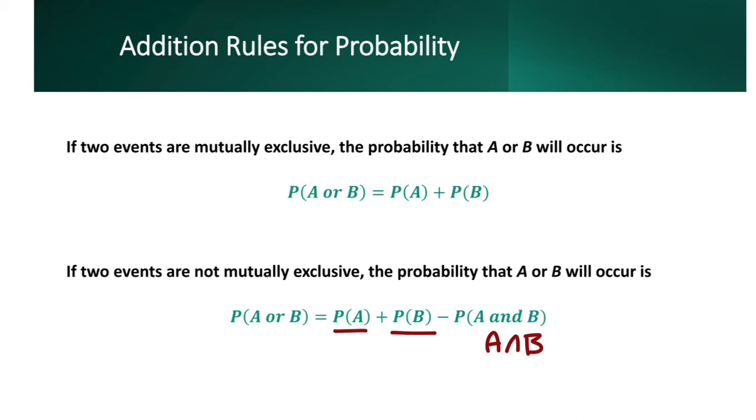Now, the cool thing is actually this formula down on the bottom here is the same formula as above, and this could be used for actually mutually exclusive events as well. The reason why is because mutually exclusive means that the intersection is zero. So if we subtract zero, it's not going to do anything as well.